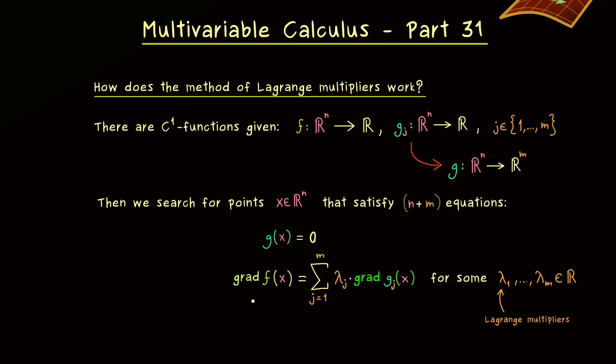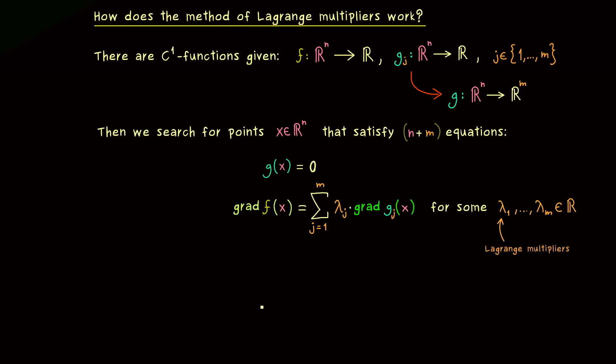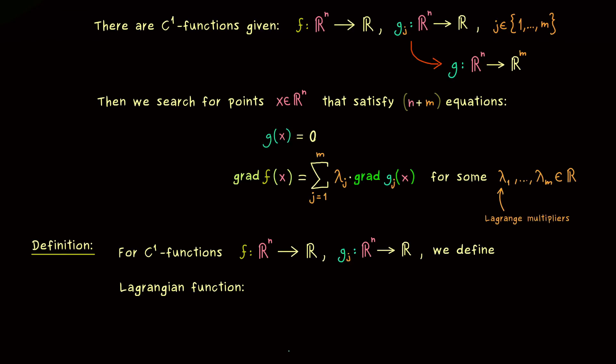Now it turns out that we can put these equations here into a more compact form, which makes it much easier to remember the whole procedure. Indeed, the only thing we have to do is define a new function using the C¹ functions which are given. This new one is what we call the Lagrange function of our problem.